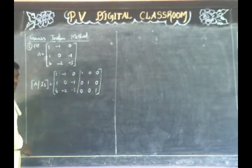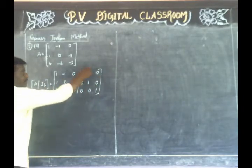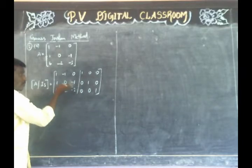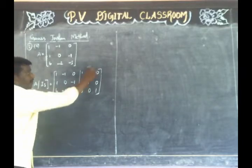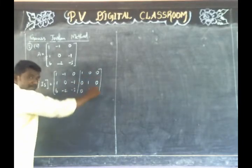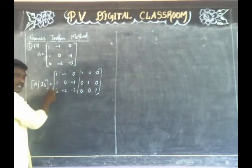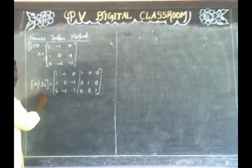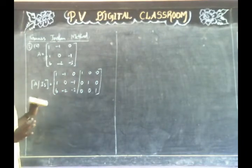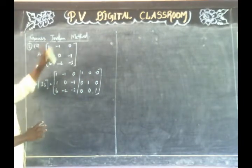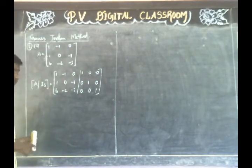Now let's look at this. The remaining part is the inverse method — that's the inverse matrix. It's the Gauss-Jordan method.